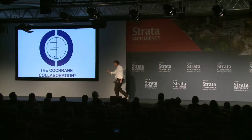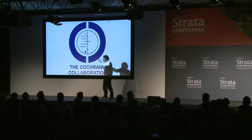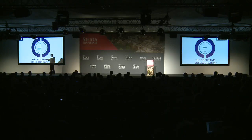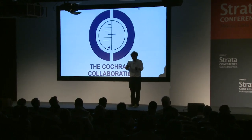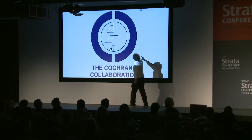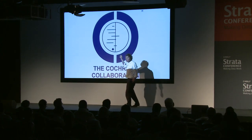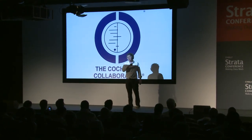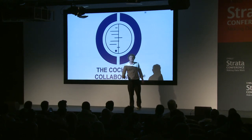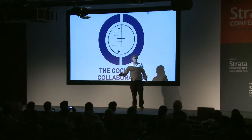In medicine we don't rely on cherry-picking data — we synthesize all the evidence together. This is a forest plot, sometimes called a blobogram. The Cochrane Collaboration is an international non-profit body that brings together all of the evidence on any given question in medicine. This particular plot summarizes a bunch of trials on whether giving a steroid injection to the mother just before she delivers improves survival for preterm babies. Each horizontal line is a trial — narrow lines are large trials with little sampling error and narrow confidence intervals; wide lines are small trials with lots of error.